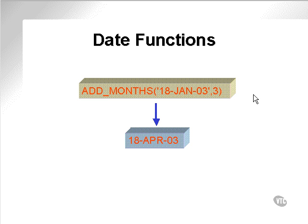Let's take a look at the date functions. Add months, in this case, takes 18 January 2003, adds three months, and comes out with February, March — the 18th of April 2003.